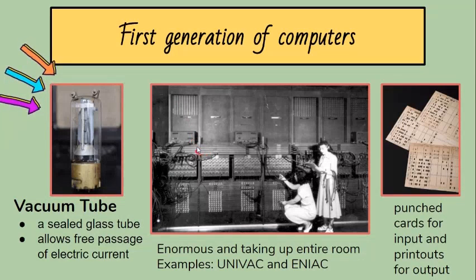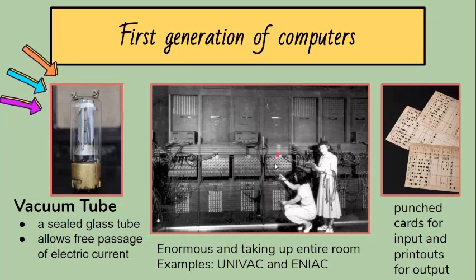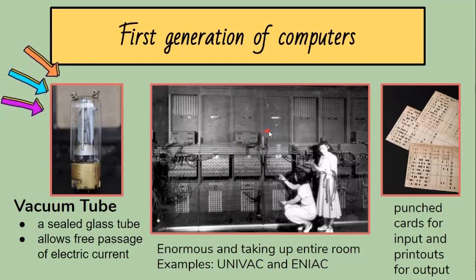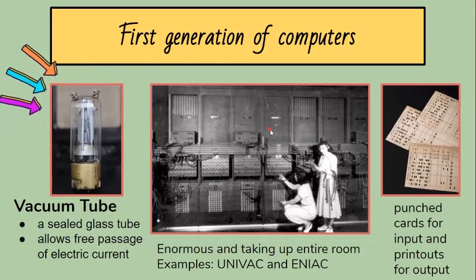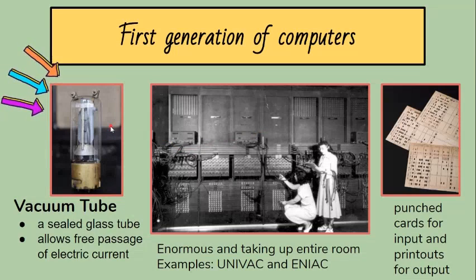Some advantages of the first generation are that this was the only electronic device and the first device to hold memory. Disadvantages are that they are bulky and large in size, vacuum tubes burned frequently, and they produced a lot of heat.